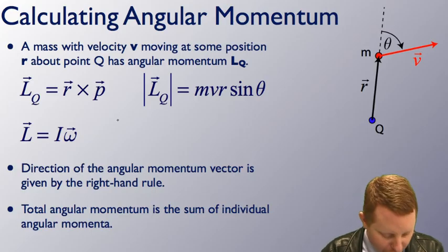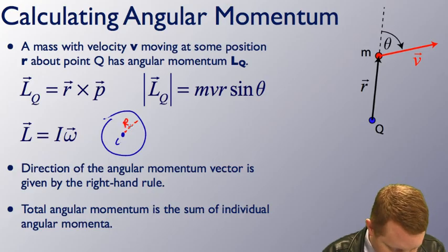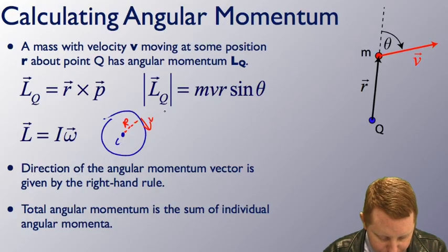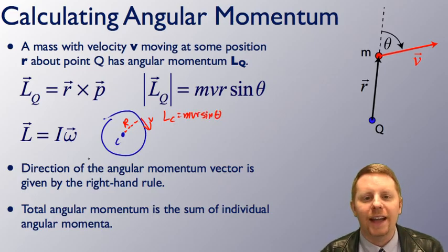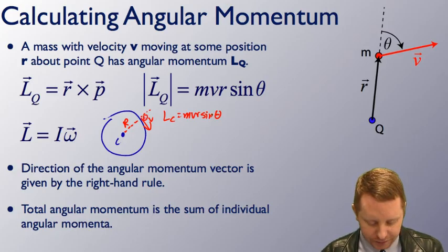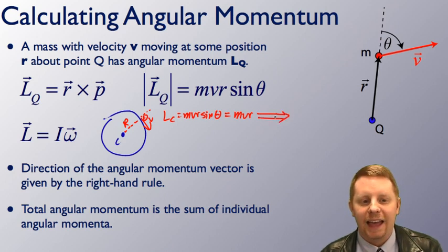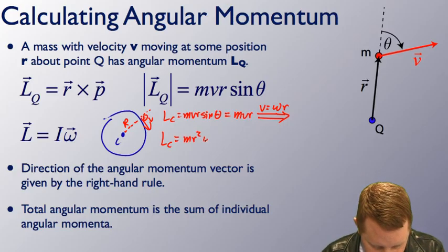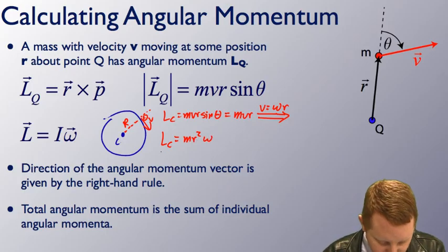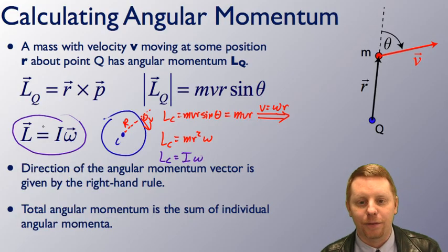We'll take a simple example of an object moving in a circular path about some point in the center C at a radius r with velocity v. The magnitude of the angular momentum about point C will be mvr sine theta. But because it's moving in a circle, anywhere around the circle that angle theta is always going to be 90 degrees. So sine 90 degrees equals one, giving us just mvr. We also know that v equals omega r, so we can rewrite this as Lc equals mr² omega. But mr² is moment of inertia, so Lc equals I times omega. That's how we get to that formula, for a simple case at least.